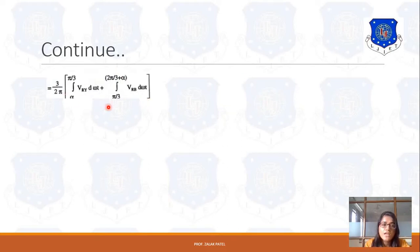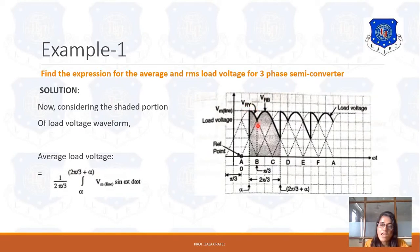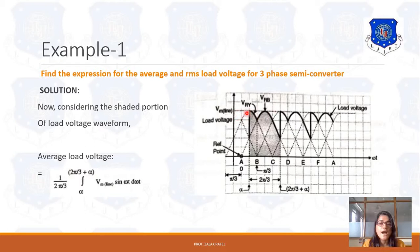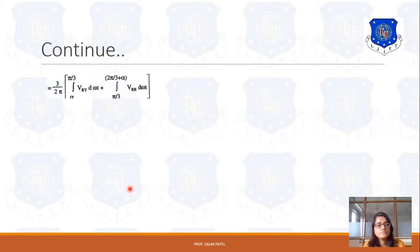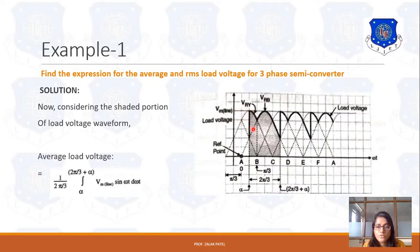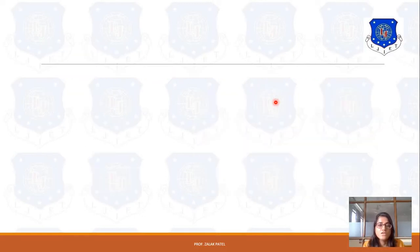If you integrate this, note that the total Vm·sin(ωt) is actually the addition of two voltages — Vry and Vrb — because if you note the shaded portion of the waveform, it contains two line voltages: Vry between R and Y terminal, and Vrb between R and B terminal. So you have to add these two terms for the integration. From alpha to π/3 it is Vry, and from π/3 to 2π/3 it is Vrb.